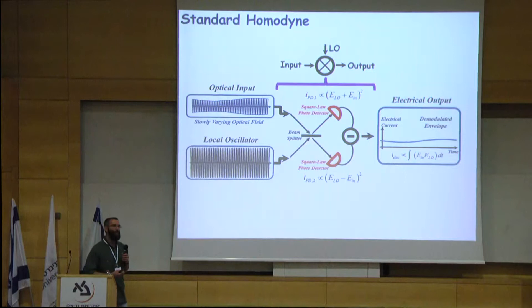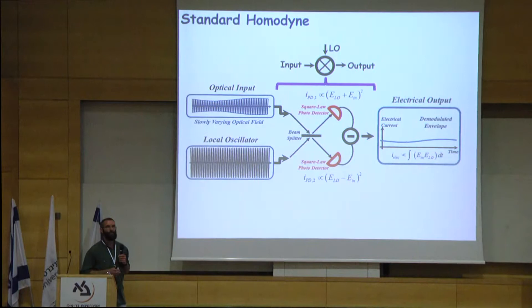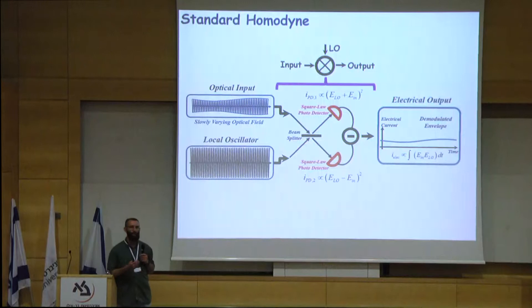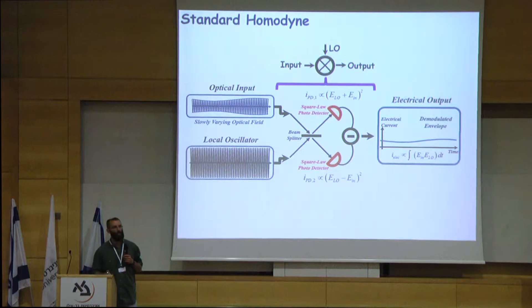Again, we have our input signal that we want to measure and the strong local oscillator. We use a beam splitter in order to produce superpositions of the two fields: local oscillator plus signal, and local oscillator minus signal. When detected on the photodetectors, they generate an electrical signal proportional to the square of the optical input. When subtracting the two electrical signals, we are left with a homodyne product. The bandwidth limitation of standard homodyne detection is in the photodetectors, which are limited to electronic bandwidths of megahertz to gigahertz range — for a low-noise quantum measurement, only a few hundred megahertz.